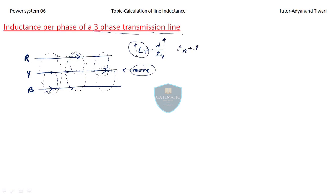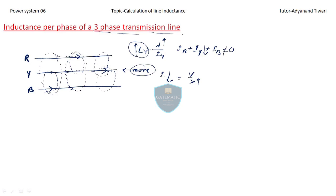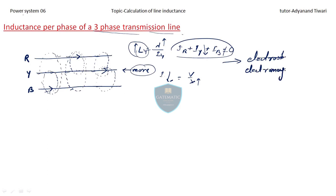In general, IR + IY + IB = 0 for a balanced system. When inductance increases, current reduces because current is proportional to V over inductance. So when IY reduces, the system becomes unbalanced — IR + IY + IB is no longer equal to zero. This effect is called the electromagnetic induction effect.